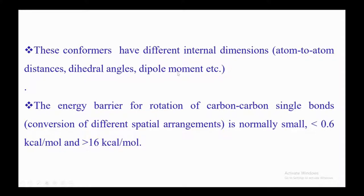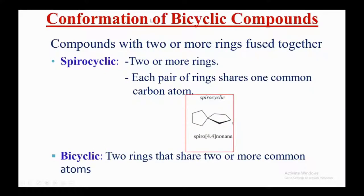The energy barrier for rotation of carbon-carbon single bonds and conversion of different spatial arrangements is normally small — less than 0.6 kilocalorie per mole and more than 16 kilocalorie per mole. Now let's discuss conformations of bicyclic compounds — compounds with two or more rings fused together.